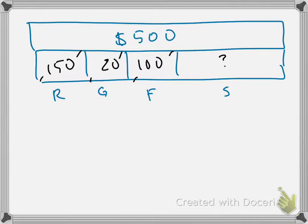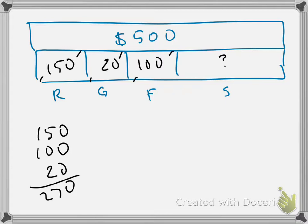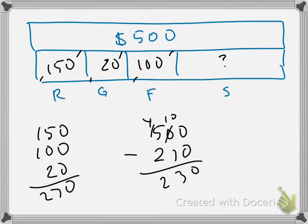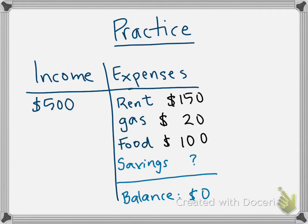This model tells you exactly what you need to do. You're going to add up all the things you're taking away — 150, 20, and 100 — and take it away once. So 150 plus 100 plus 20 equals 270. Then 500 minus 270 equals $230, and that's how much I have for savings.